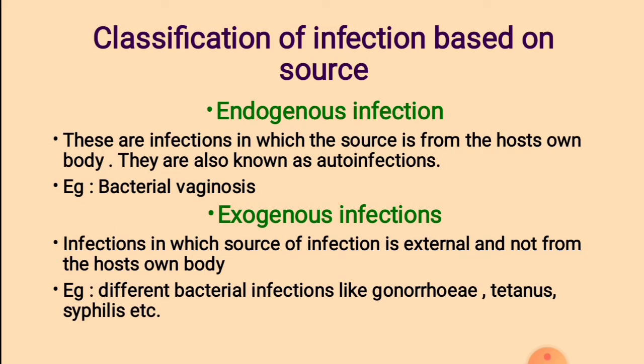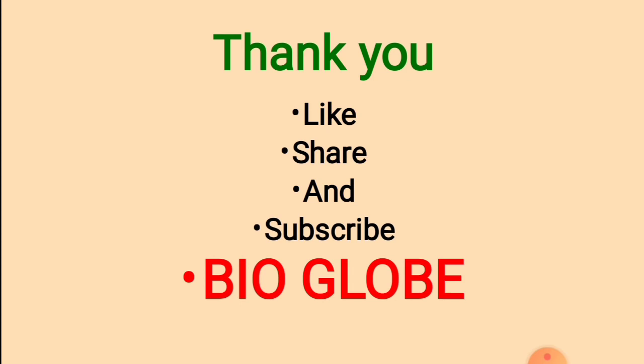Classification of infection based on source. 1. Endogenous infection: These are infections in which the source of infection is external and not from the host body. Example: different bacterial infections like gonorrhea, tetanus, and syphilis. Thank you for watching this video. If you like this video, please share and subscribe.